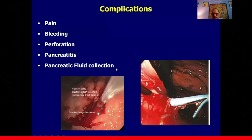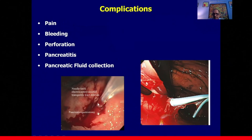Regarding complications — this procedure carries a high risk. In experienced hands, the most commonly encountered complication is self-limiting pain. However, significant complications can occur, including bleeding, perforation, pancreatitis, and pancreatic fluid collections. Bleeding can occur during the procedure, especially after transmural tract dilation, or as delayed bleeding due to pseudo-aneurysm formation from the thermal effect of electrocautery.